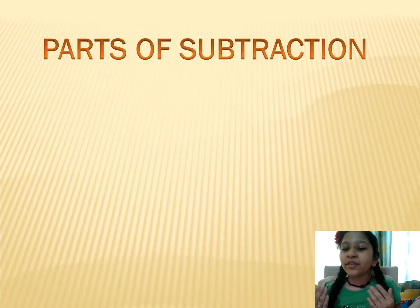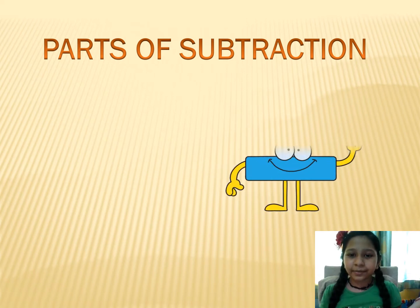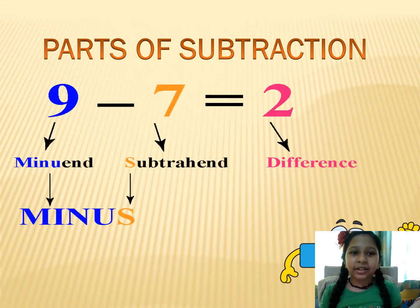Parts of subtraction. Hello, Mr. Minus. Here we have one number. 9 minus 7 is equal to 2. Here, 9 is minuend, 7 is subtrahend and 2 is difference. We will learn more about parts of subtraction in our next slide.